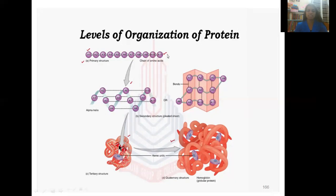In the tertiary structure, foldings and refoldings can be seen. Almost all different types of bonds are present, including hydrogen bonds, disulfide bonds, ionic bonds, and hydrophobic bonds. The quaternary structure is the macro or larger structure, where more than one polypeptide chain or more than one protein molecule associates with each other to form the quaternary structure.